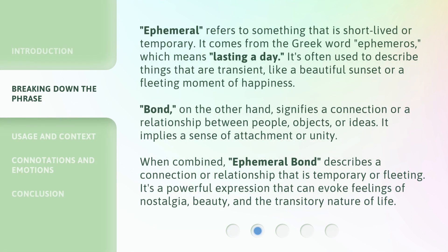Ephemeral refers to something that is short-lived or temporary. It comes from the Greek word ephemeris, which means lasting a day. It's often used to describe things that are transient, like a beautiful sunset or a fleeting moment of happiness.